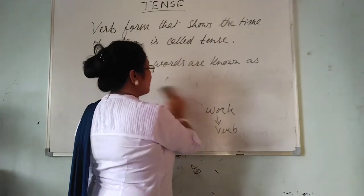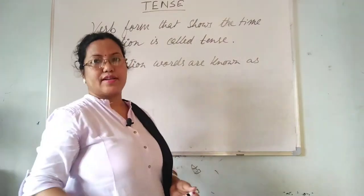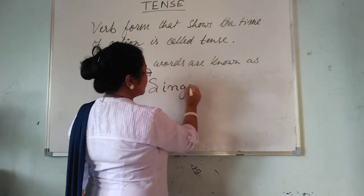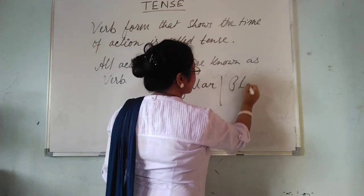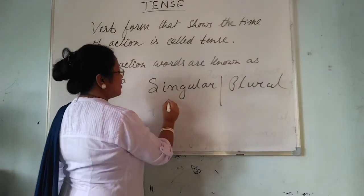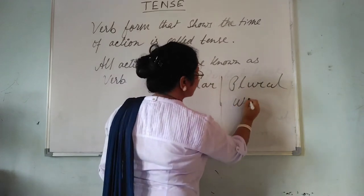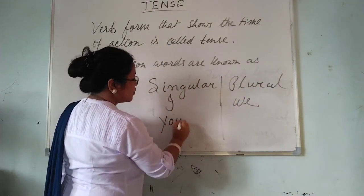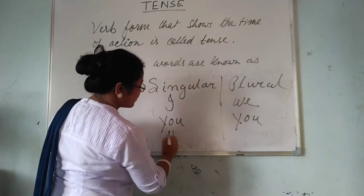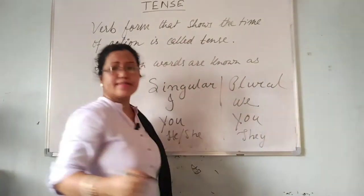Now let's know the formula. Before knowing the formula, you have to understand about singular and plural. First person singular number is 'I', first person plural number is 'we'. Second person singular is 'you', second person plural is also 'you'. Third person singular is 'he' or 'she', and third person plural is 'they'. These are very important.